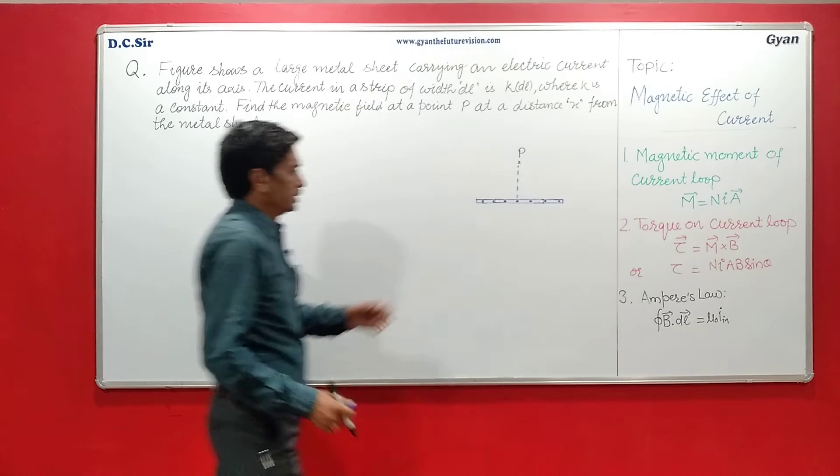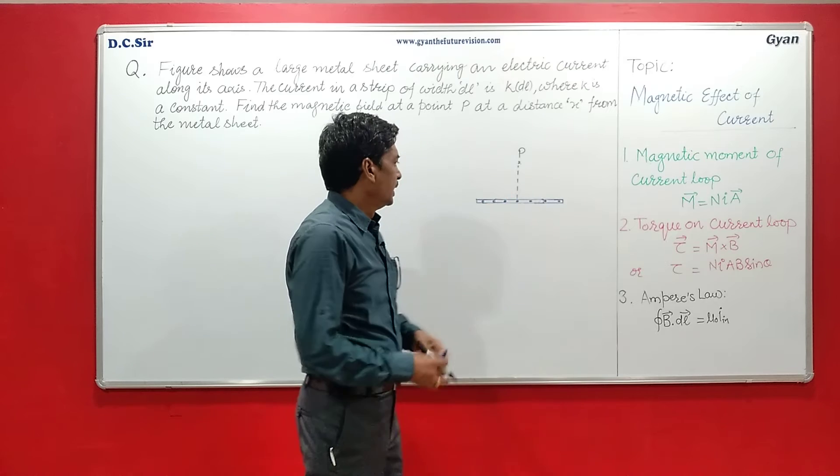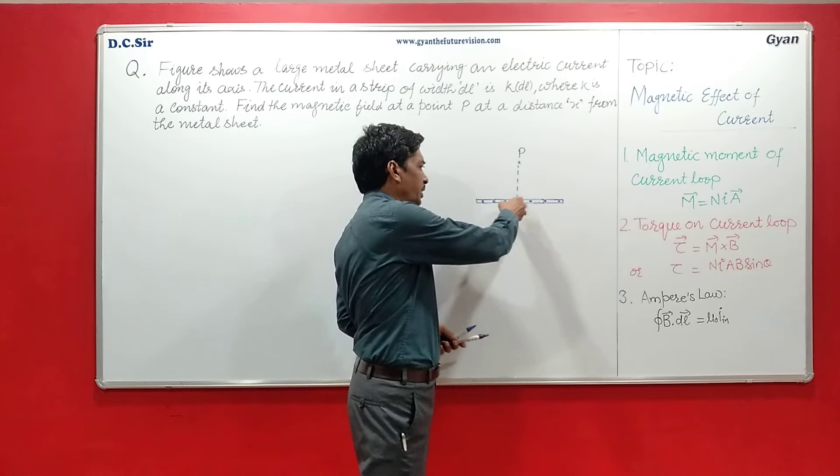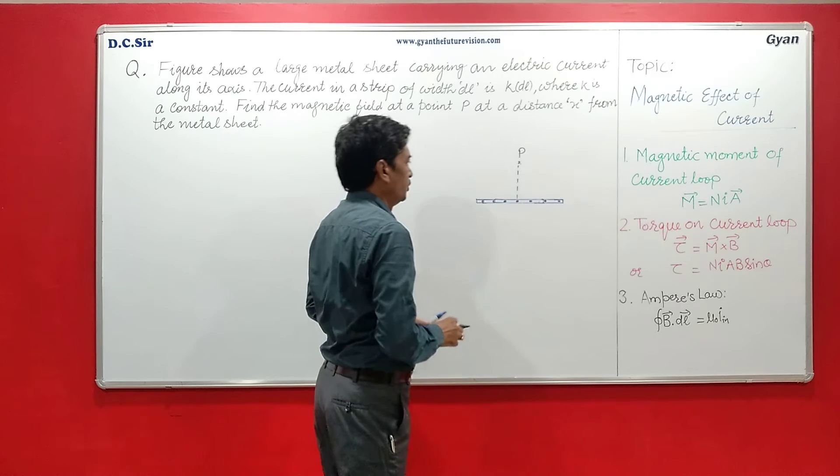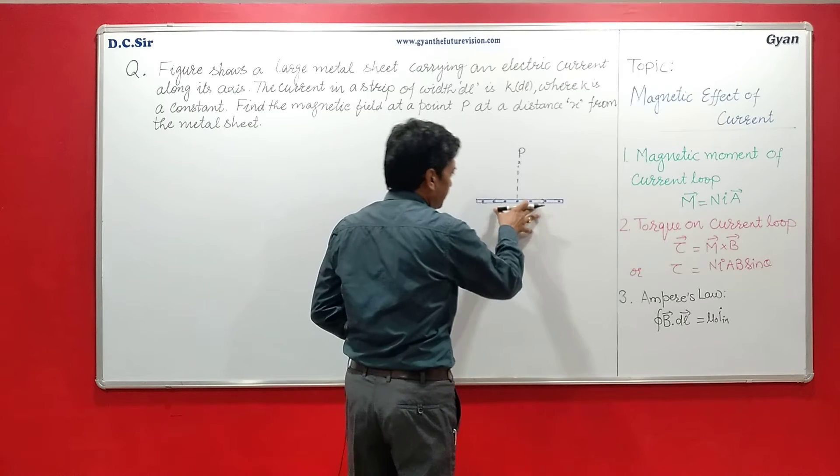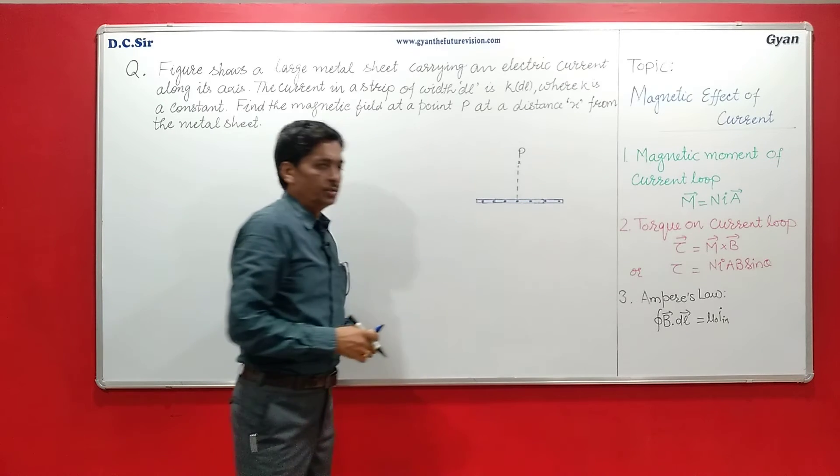So here you have seen the cross section of the metal sheet and the current in the sheet is coming out of the board. So first we have to see the direction of the magnetic field we call in the sheet.